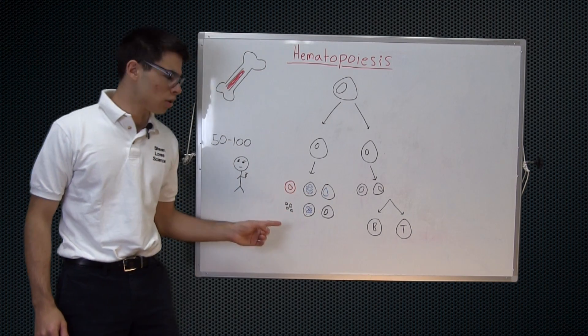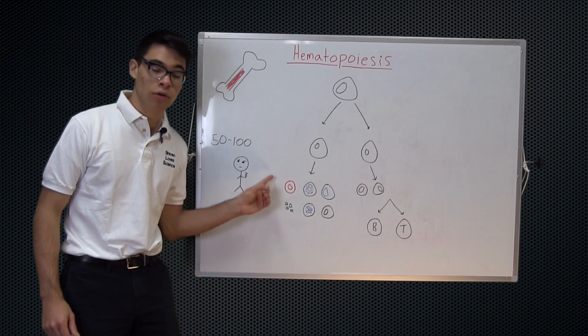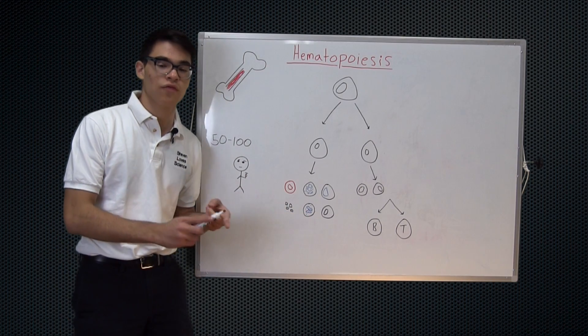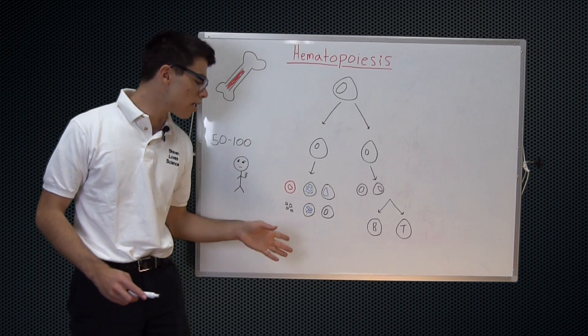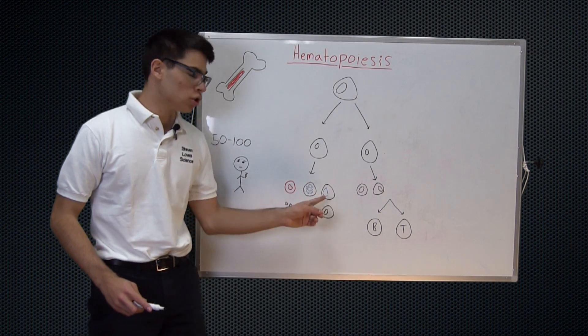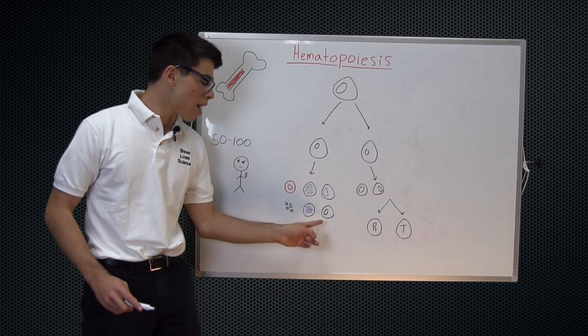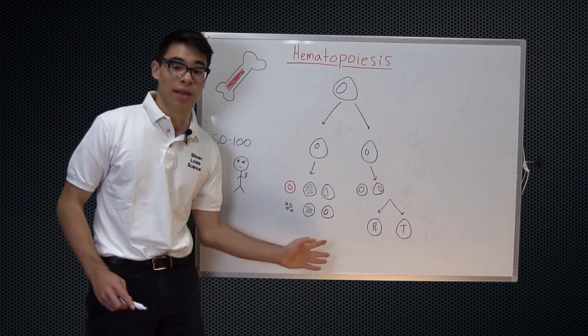The myeloid cells which include our red blood cells or erythrocytes, as well as our granulocytes which include neutrophils, eosinophils, basophils, etc. Our platelets, our dendritic cells, our monocyte which can then become an activated macrophage.